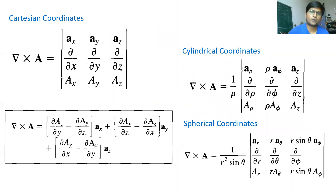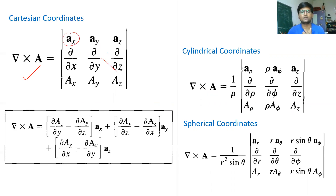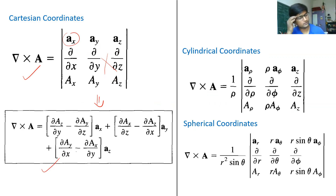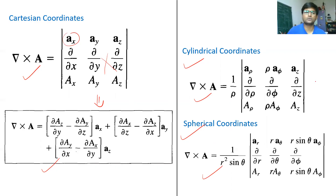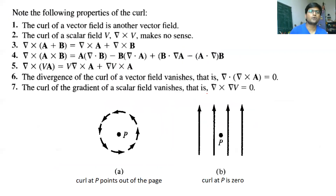The standard formula for curl in Cartesian coordinates requires taking the determinant — you take one element, then the multiplication of this minus this, and this is what is written in the expanded form. Similar to gradient and divergence, we will calculate the curl in cylindrical and spherical coordinates as well. You have to remember these formulas; for further derivations you can refer to the electromagnetic field theory book by Sadiku.